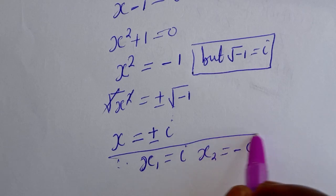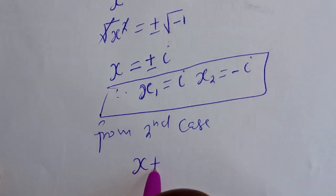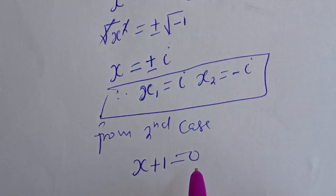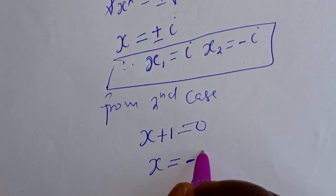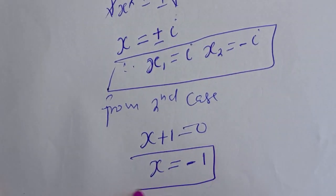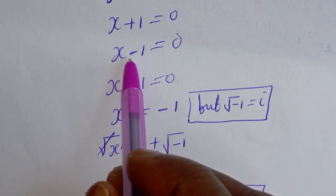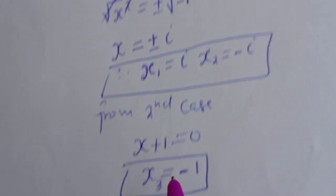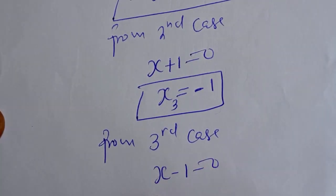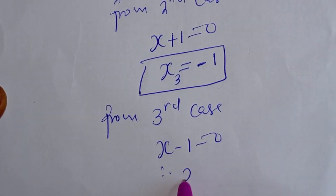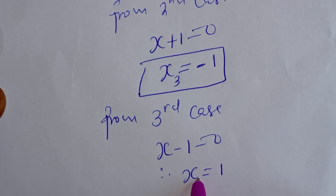From the second case, S plus 1 is equal to 0, so S is equal to minus 1. This is S3. And from the third case, S minus 1 is equal to 0, therefore S is equal to 1. Let's call this S4.